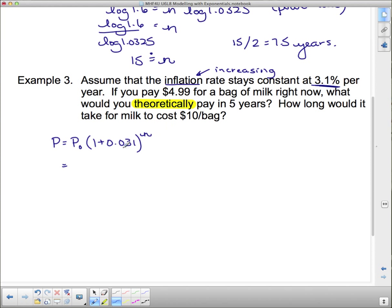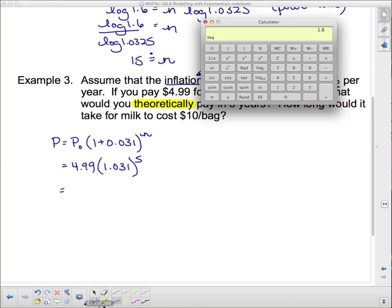Now we just happen to know we want an n for five years. So we go P₀, and I can fill in P₀, it's $4.99, so right now a bag of milk costs us $4.99, we want to apply this growth factor on it and see what it comes to.